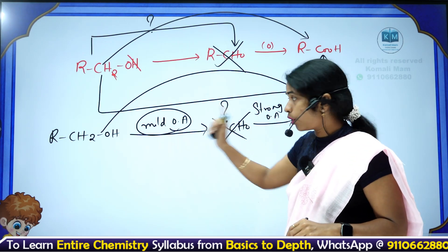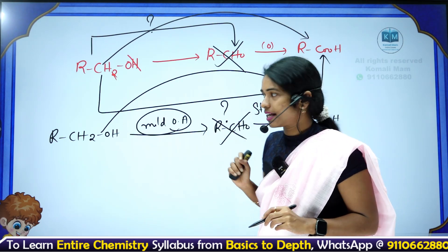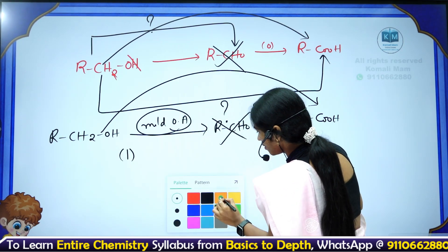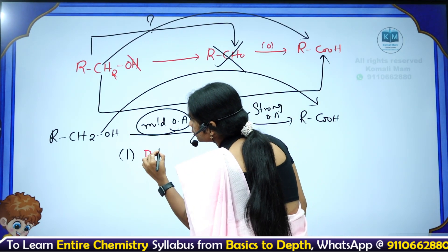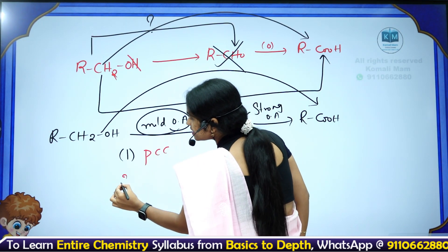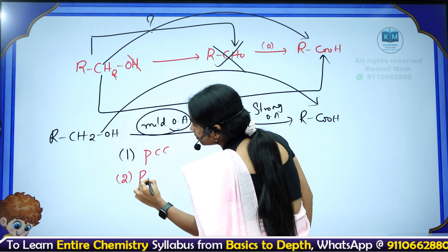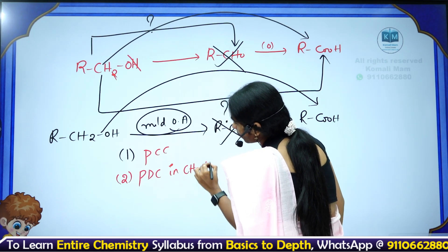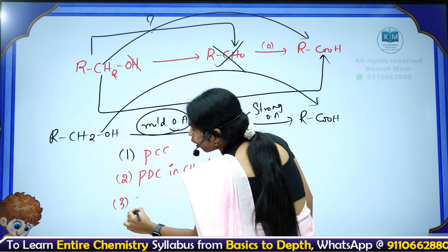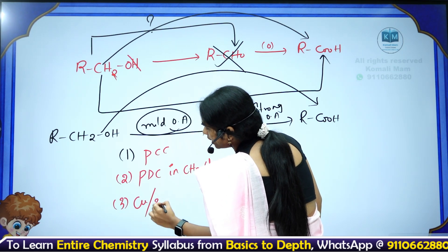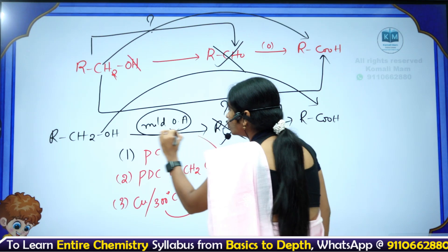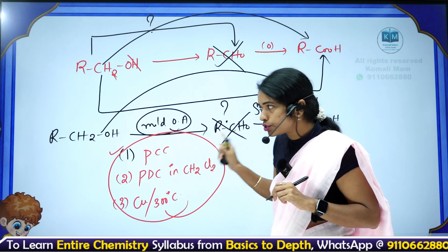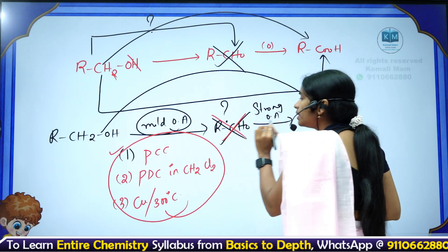Here is the list of mild oxidizing agents. First reagent: pyridinium chlorochromate (PCC). Second reagent: pyridinium dichromate in dichloromethane. Third reagent: copper over 300°C. You can use any one of these reagents for converting primary alcohols to aldehyde — stopping the reaction at the aldehyde stage.